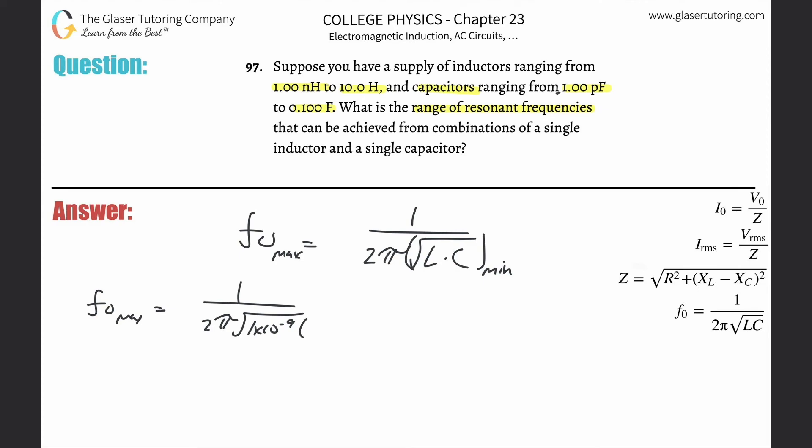Plug it in and this will correlate to the max. So there's one divided by two pi times the square root of 1×10^-9 times 1×10^-12. We get a value here of about 5.03×10^9 hertz—about 5 billion hertz. That's the max.